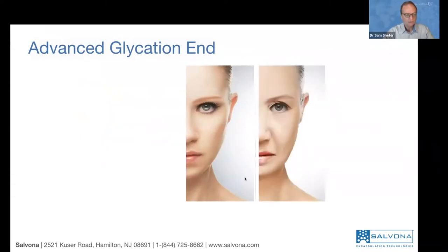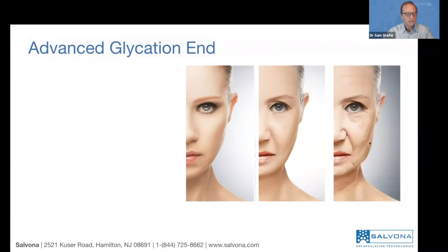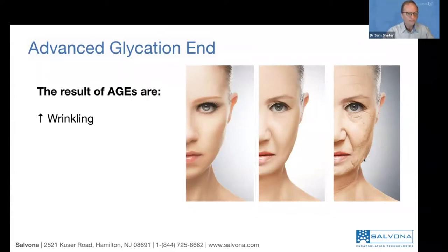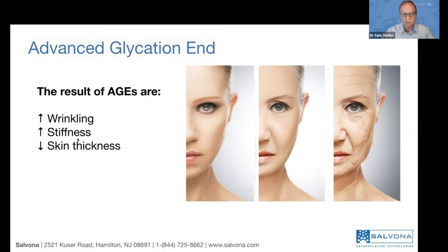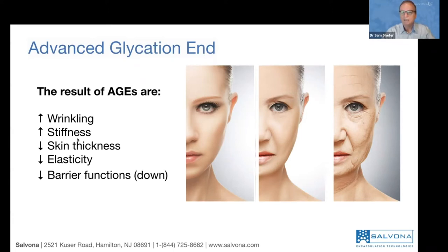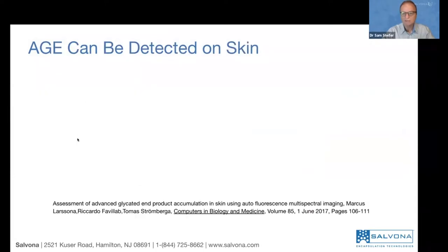In younger skin vs. aged skin, wrinkling effect goes up, stiffness goes up, skin thickness goes down — you can see it in the hands, around the eyes. Elasticity goes down, barrier function goes down, and the skin loses a lot of water. Dry skin accelerates other aging processes. The advanced glycation end product is something we need to understand better and address.